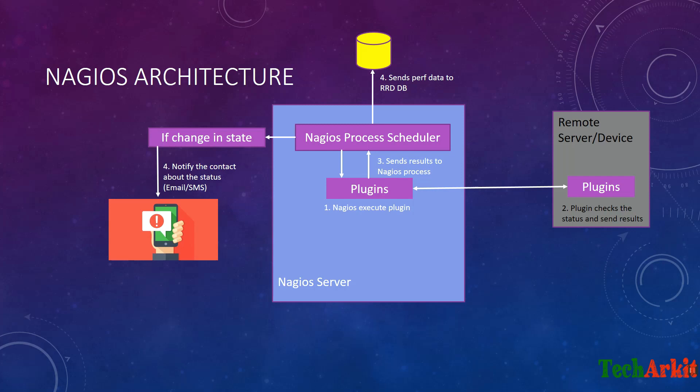It will also store this performance data into the already database. This is the high-level Nagios architecture — how it checks the status on the remote device and processes the data inside Nagios.